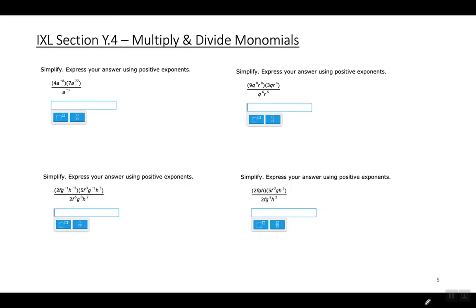There are six more examples. On this one: 4 times 7 is 28, and a to the negative eighth power times a to the seventy-seventh power is a to the sixty-ninth power.